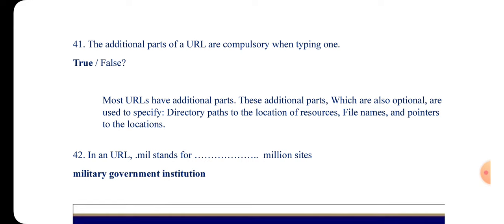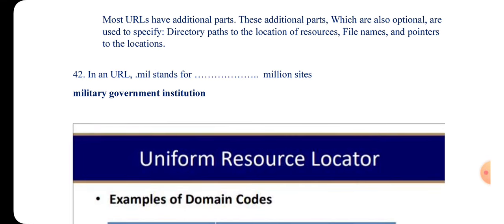Question 41: The additional parts of a Uniform Resource Locator (URL) are composed when typing one — true or false? Most URLs have additional parts which are also optional and are used to specify the directory path to the location, resource file names, and pointers to the location. The answer is true.